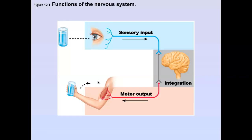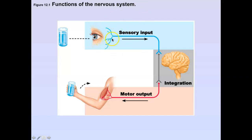Sensory information or sensory input is anything coming into the brain from your body. It can be coming from your skin — touch, itch, pain, temperature — or from your eyes or ears, some kind of sense. It could be stretch of your muscles or tendons. Whatever that sensory information is, it's coming from your body and going incoming to the brain. So the brain receives sensory information, or sensory input.